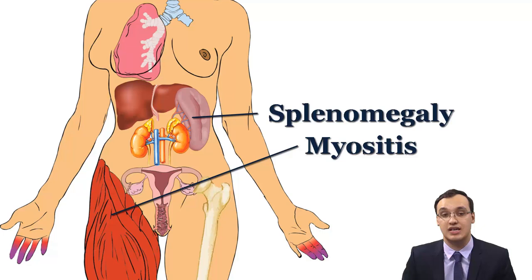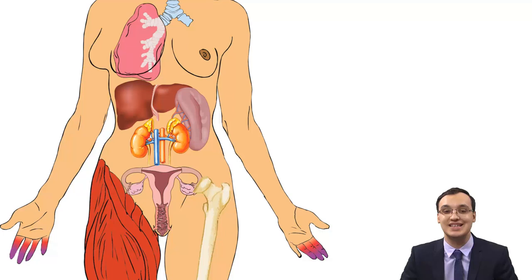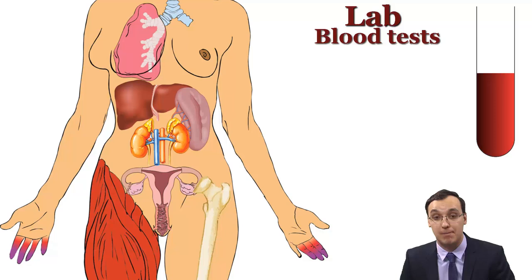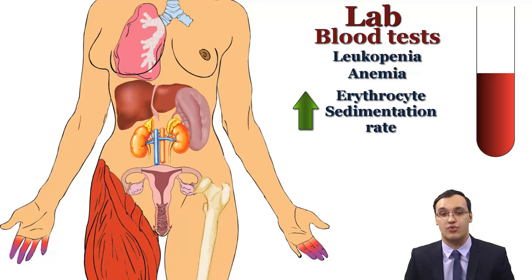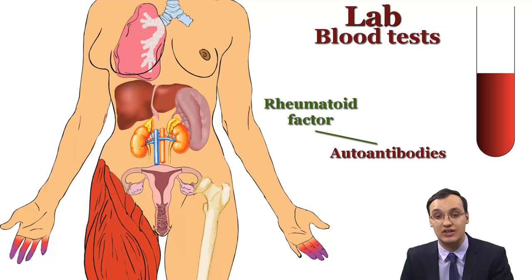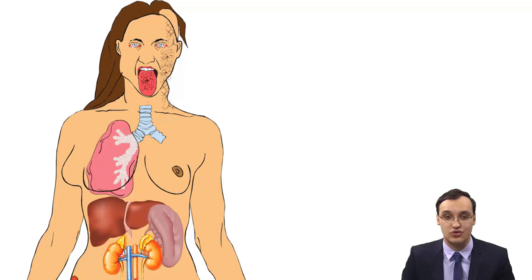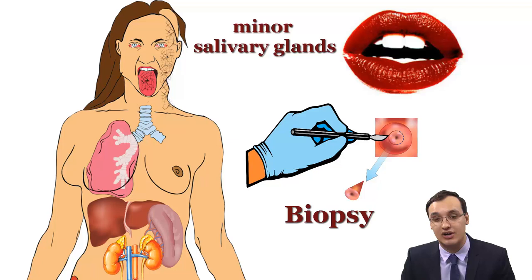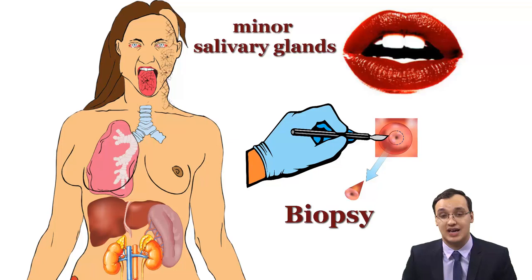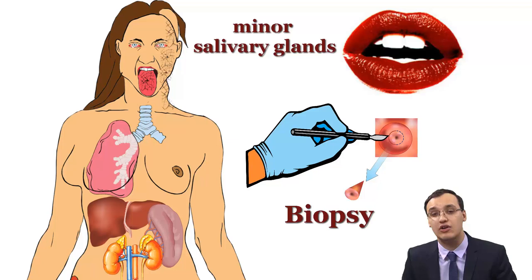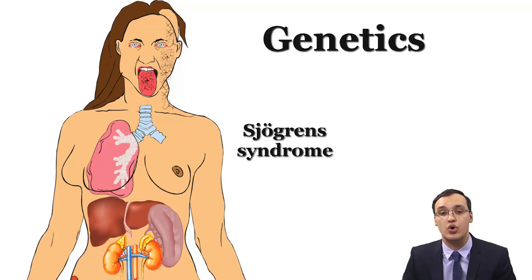To confirm Sjogren's syndrome, we need laboratory tests. Blood tests can reveal leukopenia, anemia, an increased erythrocyte sedimentation rate, and autoantibodies — rheumatoid factors and antinuclear antibodies called SSA/Ro and SSB/La. We can confirm the diagnosis by taking a biopsy from the lip, specifically from the minor salivary glands in the buccal mucosa, which will show lymphocytic invasion of the salivary glands with atrophy of the tissue. Genetic tests can show an association of Sjogren's syndrome with HLA-DR3.